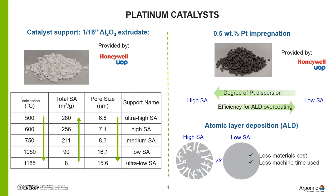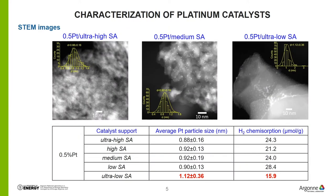After that, 1.5% of Pt was impregnated on each of those 5 supports. So why did we investigate different surface area supports? Because for ALD, we know less material and machine time will be used on low surface area substrates. But for catalysis, we need high surface area to fully disperse Pt nanoparticles as small as possible. From the SEM images, those Pt nanoparticles have an average size around 0.9 nanometer.